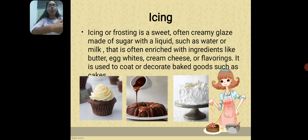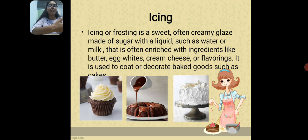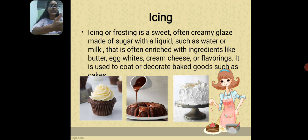Icing, also known as frosting, is a sweet and often creamy glaze made up of sugar and a liquid such as water or milk. It is often enriched with other ingredients like butter, egg whites, cream cheese, and flavoring. It is used to coat and decorate bakery goods such as cakes. The first picture shows buttercream, the second picture is glazing, and the third one is fondant.